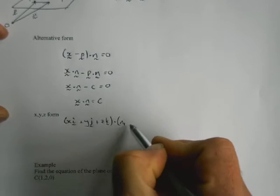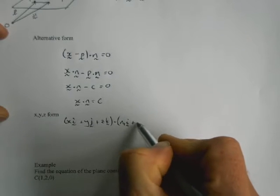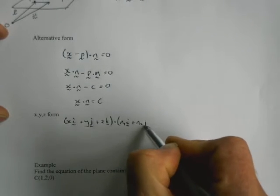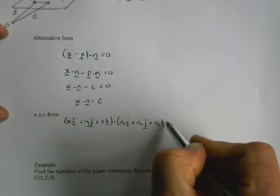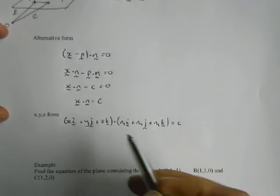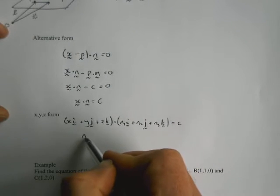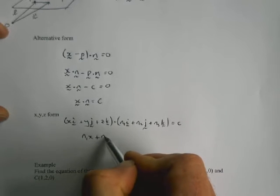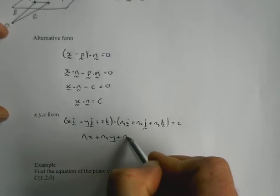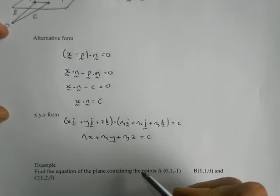Dotted with n1 normal, I'm just going to call n1 in the i direction, plus n2 in the j direction, plus n3 in the k direction, equals a constant, and then just do the dot product. So I get n1x plus n2y plus n3z equals a constant.